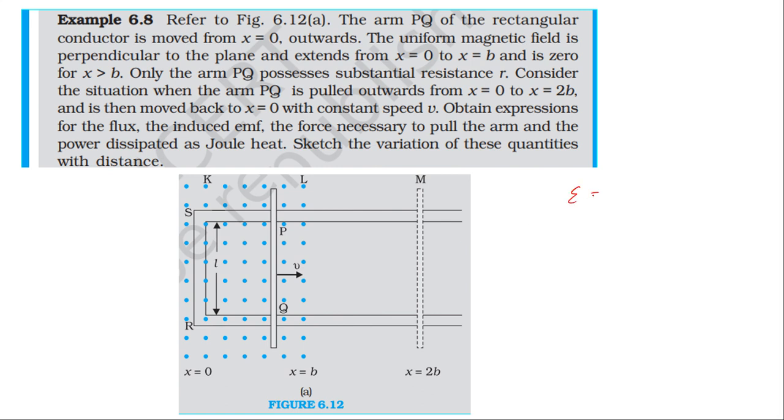The induced EMF formula is EMF equals BLv. The current i equals EMF divided by resistance, which is BLv divided by r.